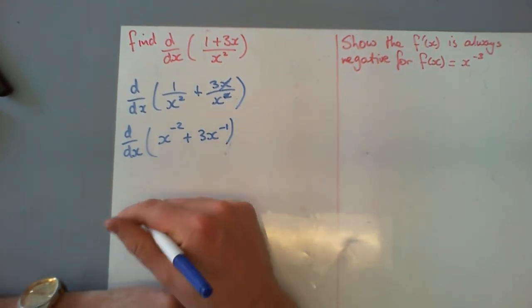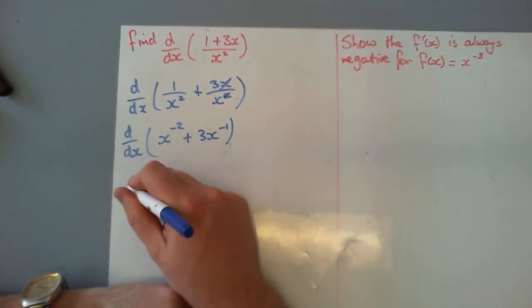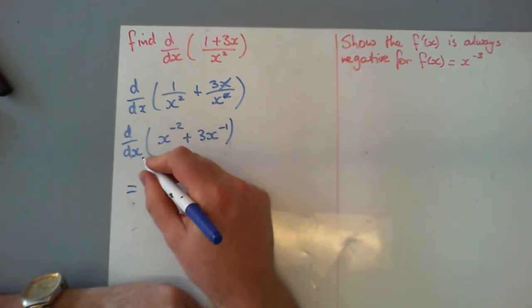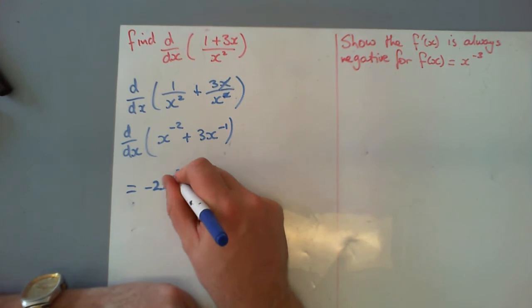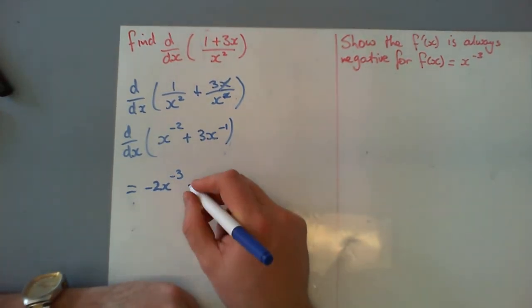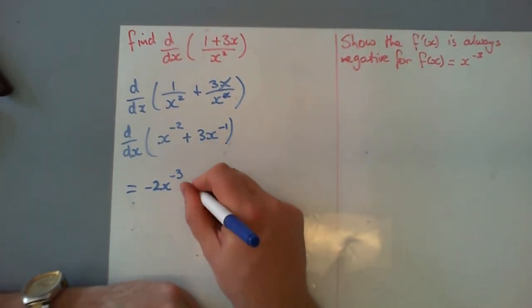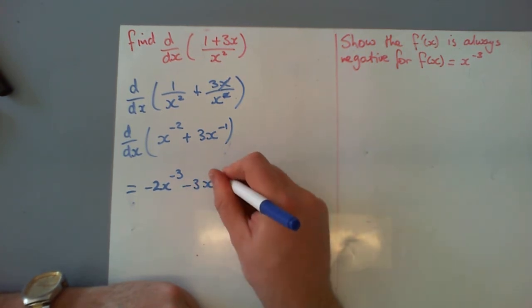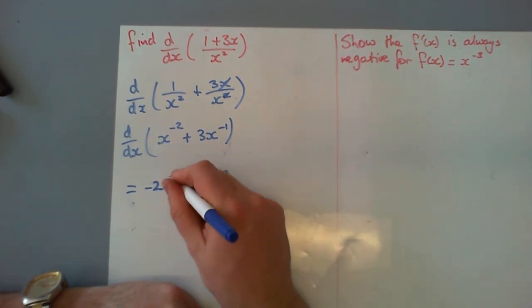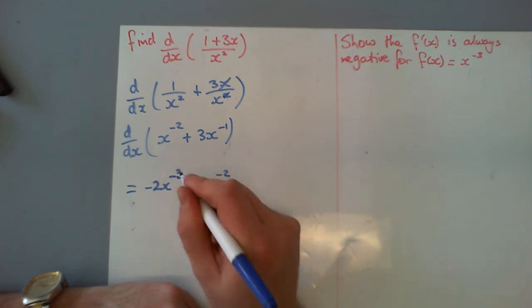So we need to find our derivative now, which is going to equal, well, negative 2 is going to come down, which is our power by 1. It's going to make it negative 3. And now we've got negative 1 times 3 is going to give us negative 3x to the negative 2.